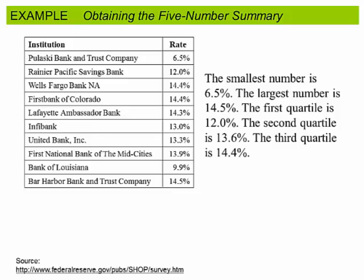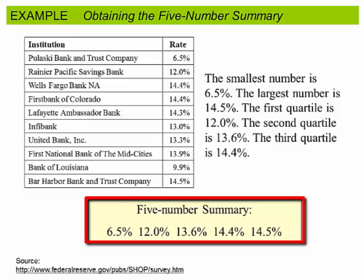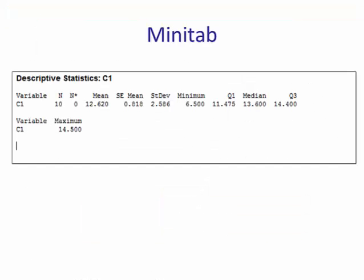the first quartile is 12%, second quartile is 13.6%, and the third quartile is 14.4%. Thus the five-number summary is written this way: 6.5%, 12%, 13.6%, 14.4%, and 14.5%. Now again in Minitab, Minitab computes the quartiles a little bit differently.